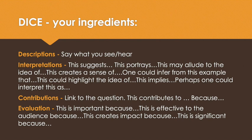Here are some sentence starters to get you thinking about how you should write 12 mark questions. When writing your description, you need to say what you can see or hear in the work. When writing your interpretation, you need to use phrases such as: 'This suggests,' 'this portrays,' 'this may allude to the idea of,' 'this creates a sense of,' 'one could infer from this example that,' 'this could highlight the idea of,' 'this implies.'